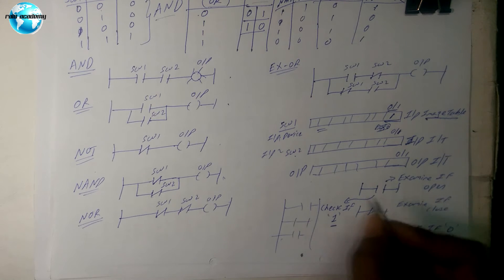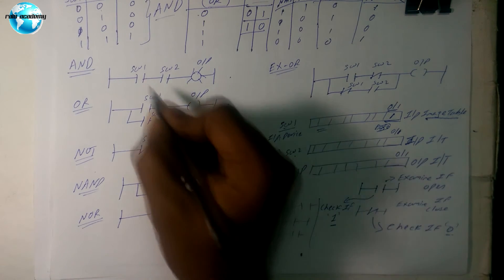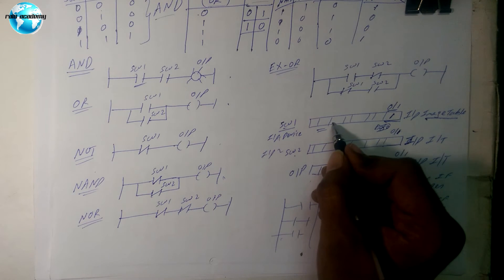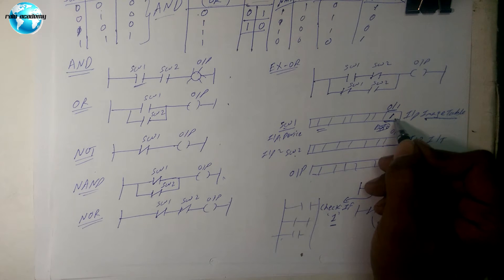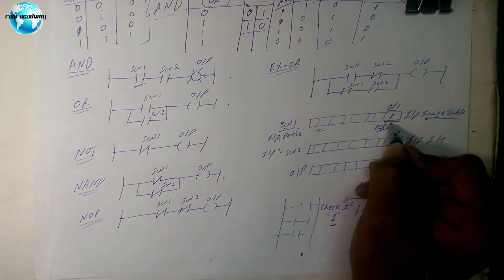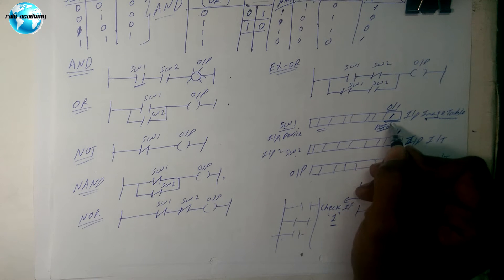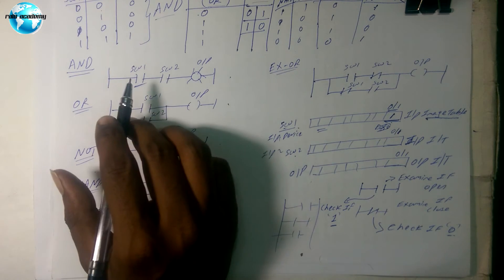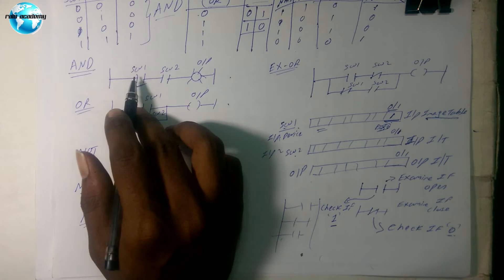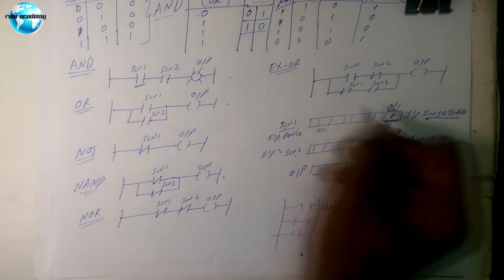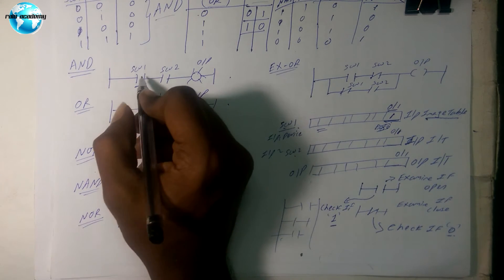When you see this symbol, I'm asking the PLC to check the input image table memory — whether the last bit of that input is zero or one. So 'check switch one last bit: is it set or not set?' If a person presses the switch — moving it from off to on — it will update the image table and set it to one. So we check: if it is one, that means the person has pressed the switch.